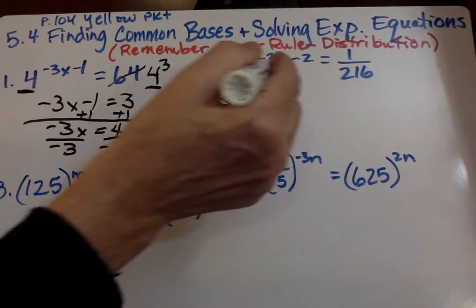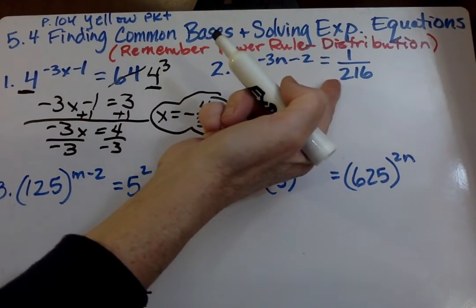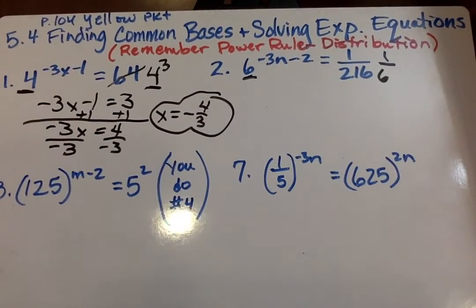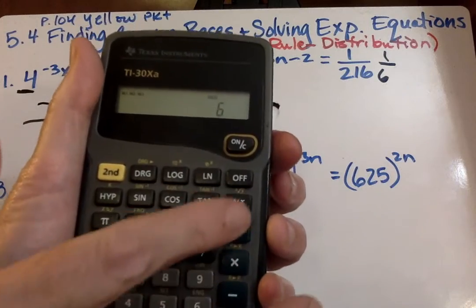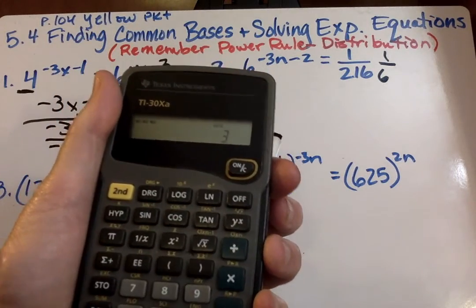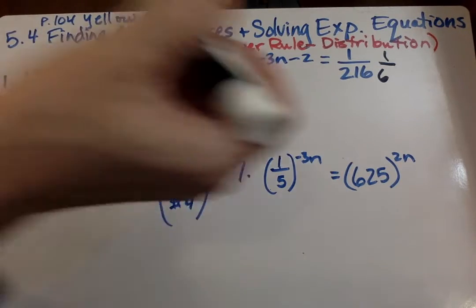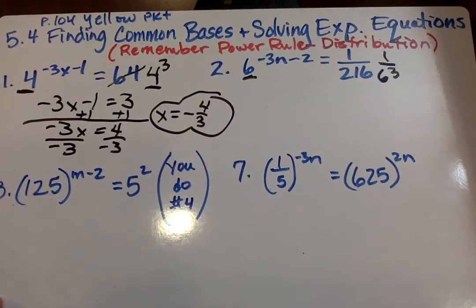Let's go on to number 2. This base is 6. That one doesn't have a base of 6, so let's make it a base of 6. So it's 1 over 6 to what power? So what do you think 216 is going to be? 6 to the x. Would it be 3 again? Yep. Now 6 to the third is on the bottom, and we need it to be on the top.